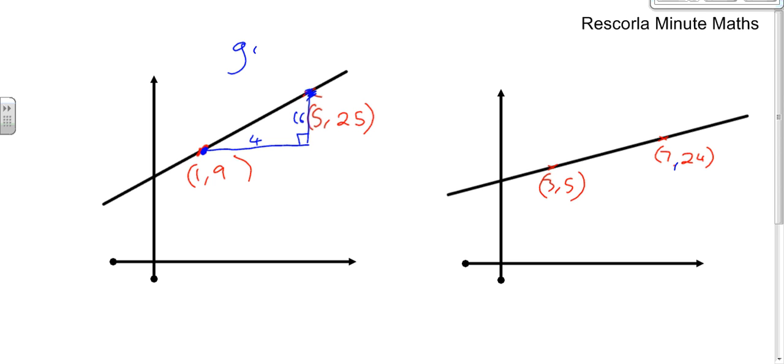So the gradient is 16, because that's how much it's gone up, over 4, because that's how far it's gone across. 16 divided by 4, if we can simplify it, we do, which is 4. So the gradient of that line is 4.